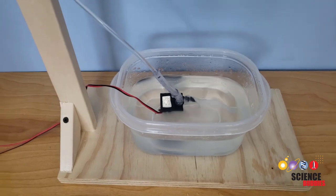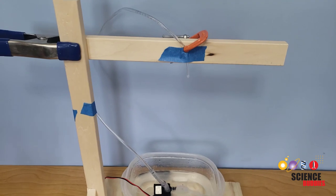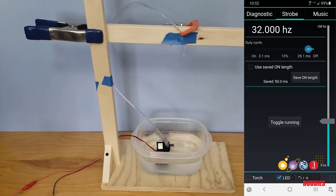You can build your own levitating water fountain using a small pump, some tubing, and a strobe light app on your phone.